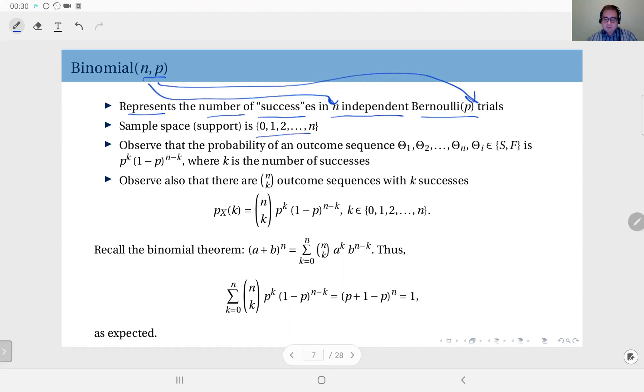Let's assume your outcome is this sequence: theta_1, theta_2 up to theta_n, and each of these thetas is either success or fail. When you consider the order important, this is a distinct sequence, and the probability of every such sequence is given by p^k times (1-p)^(n-k), where k represents the number of successes.